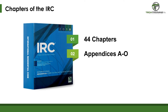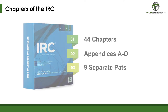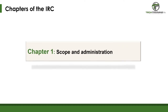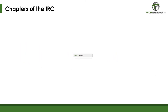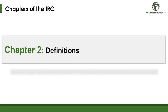Part 1 is Administrative, consisting of Chapter 1, Scope and Administration. This chapter is broken down into two sections: the first section is Scope and Application, and the second section is Administration and Enforcement. Part 2 of the IRC is Definitions, consisting of Chapter 2, Definitions. In this chapter, we will find the italicized terms previously discussed.